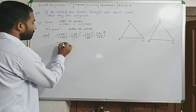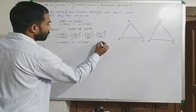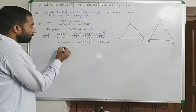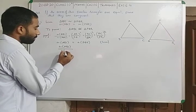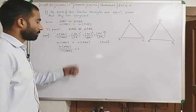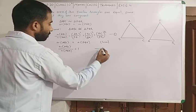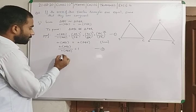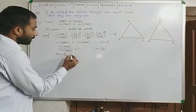Given: area of triangle ABC is equal to area of triangle PQR. So we can transfer this here: area of triangle ABC upon area of triangle PQR is equal to 1. From equations 1 and 2: